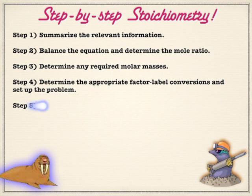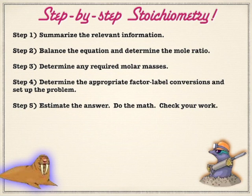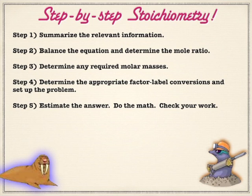So here are the steps to stoichiometry. Always summarize your relevant information in a word problem. Pull out what's important, put down question marks of what you need to solve for and then ignore the rest, and you're going to save a lot of time. Steps 2 and 3 — balancing the equation and figuring out the relevant molar masses — can really be done in whatever order you want. Just get it all done before you start the problem.